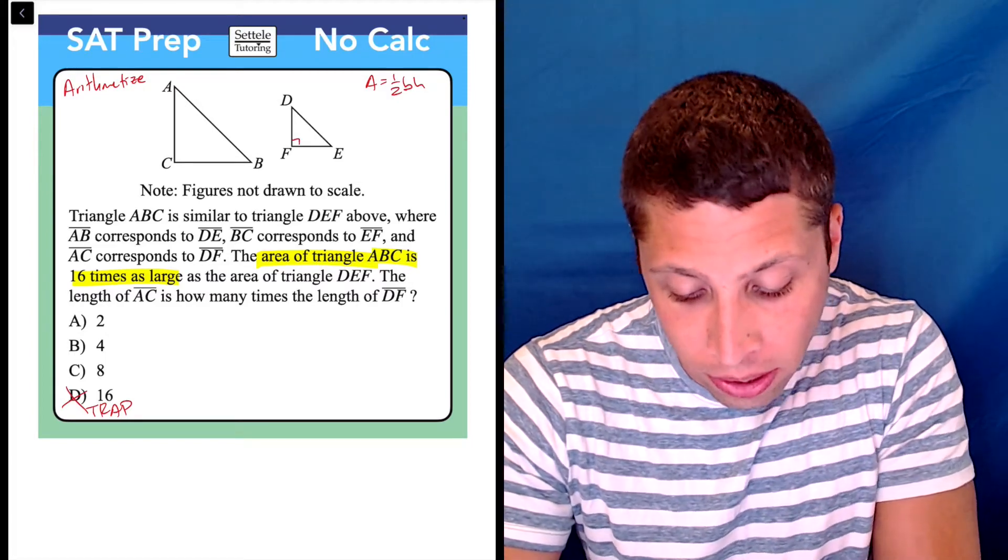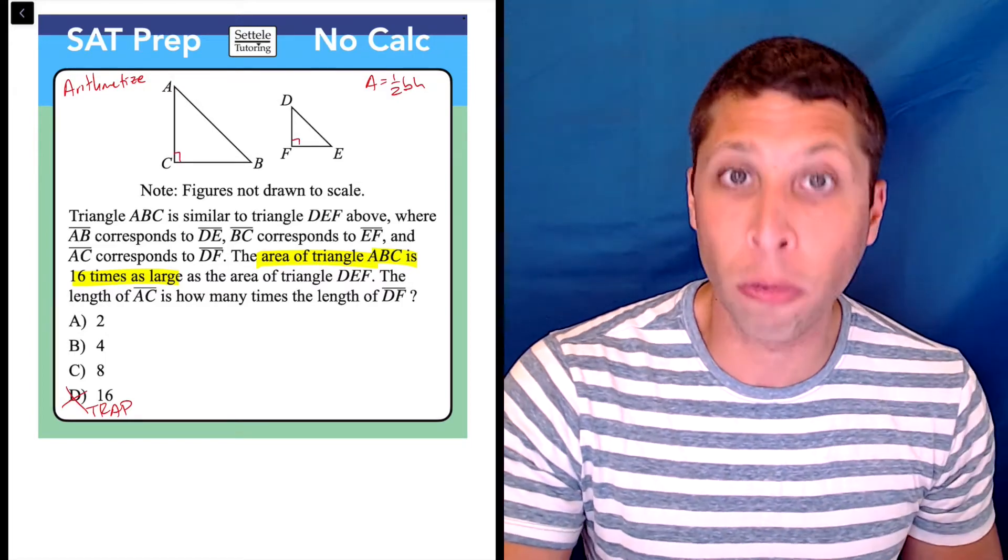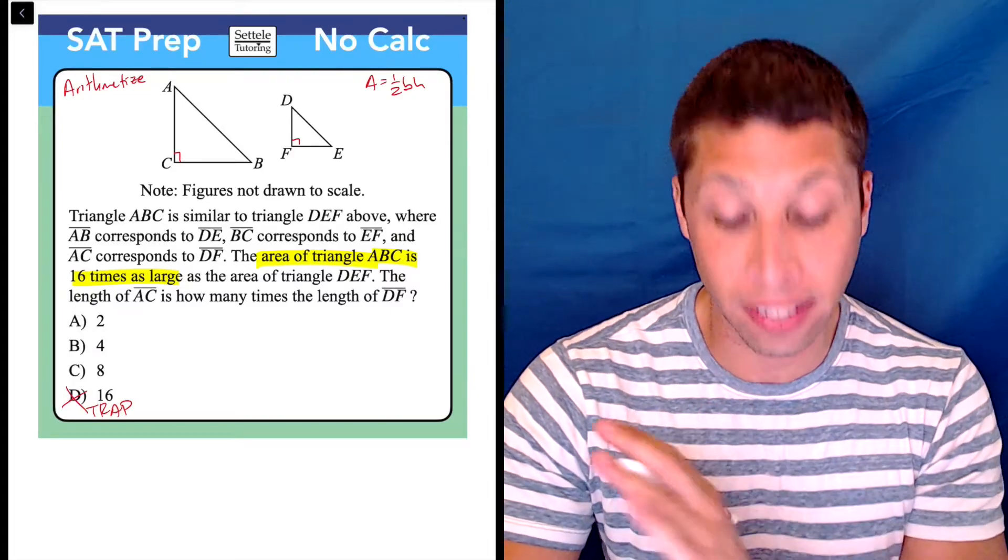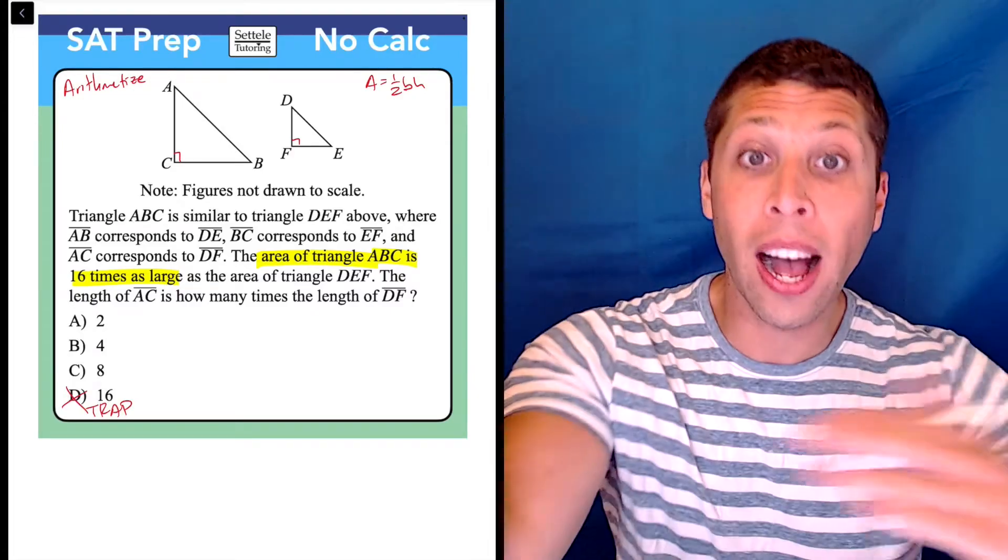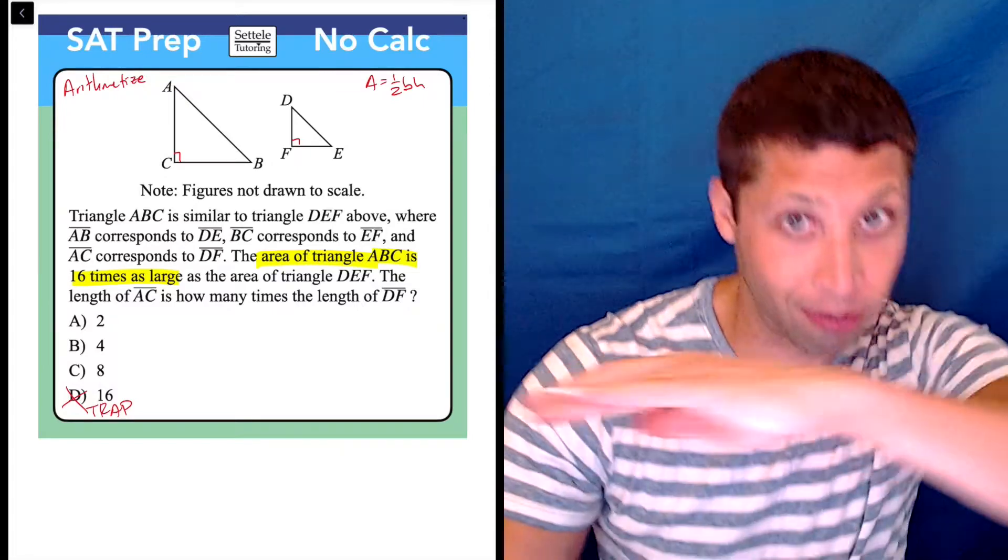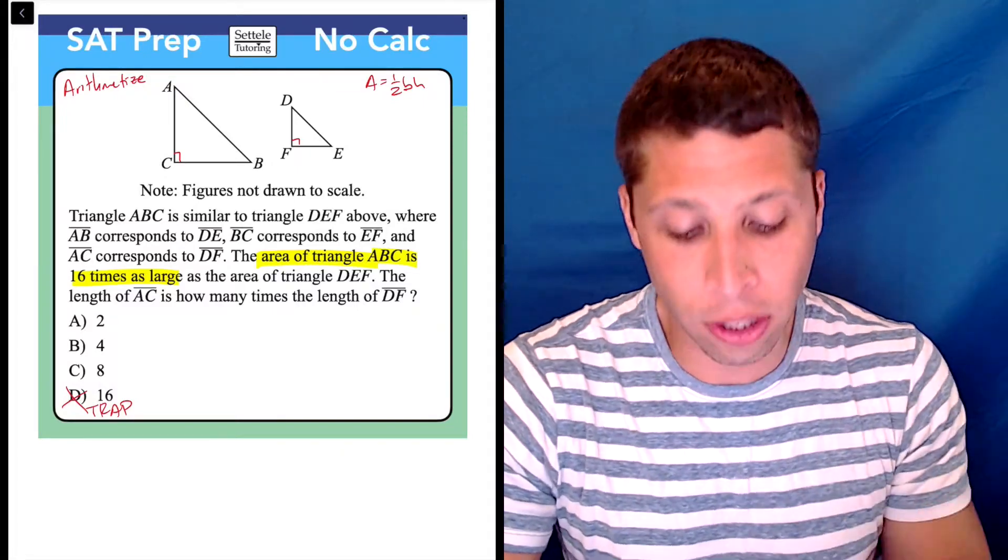It says not drawn to scale, but for the sake of simplicity, I'm going to assume they're right triangles here and think about the base and the height as the two sides that go straight up height and straight across base. So, what could I do here?